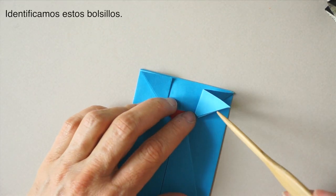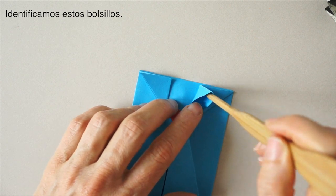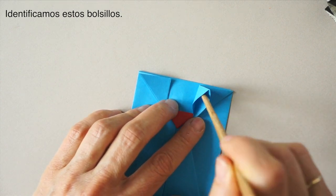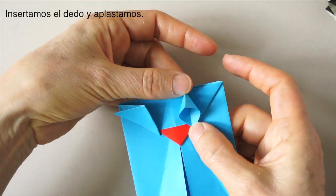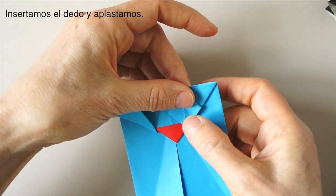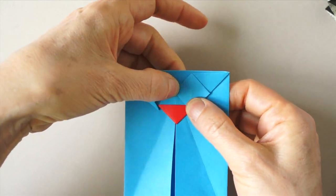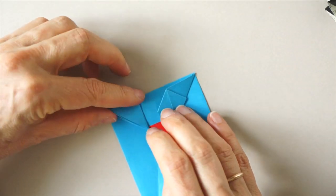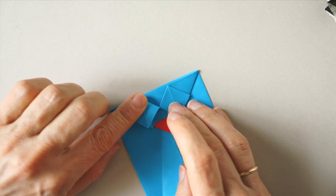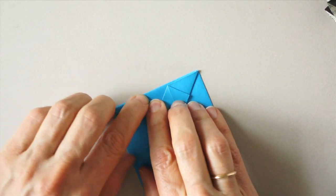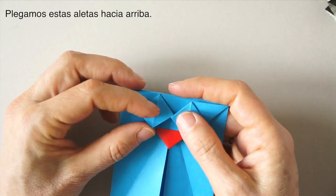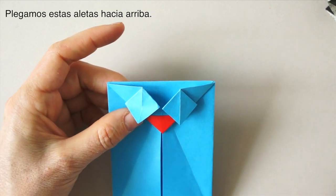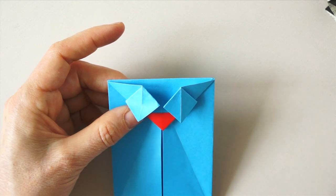Now we are going to identify some packets here. We are going to insert our finger and squash. Now we have these flaps. We are going to fold them up, creating a fold from this point to this point.